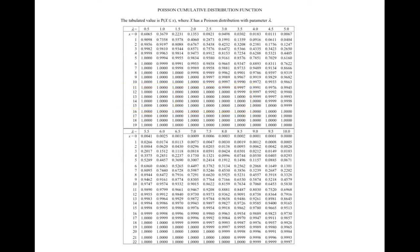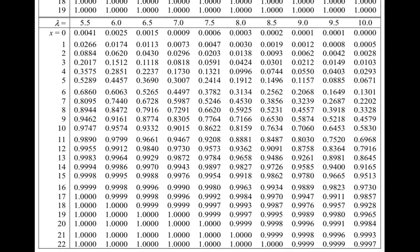So we look at the tables and we need to find where lambda is 6.5. Once we've found that, we need to look across from where x is equal to 7 and find the probability in the right column. It's 0.6728. Then we look across from 4 and again find the probability in the relevant column, and it's 0.2237.